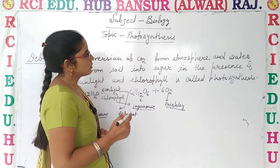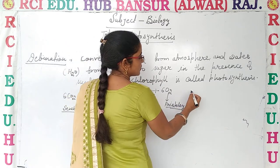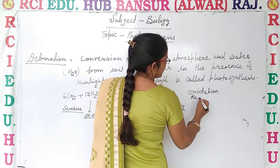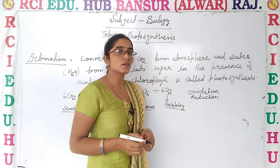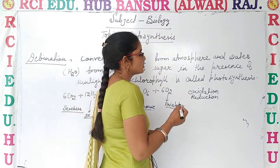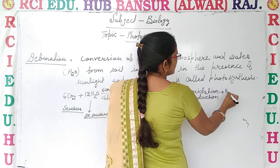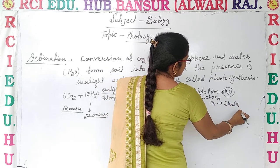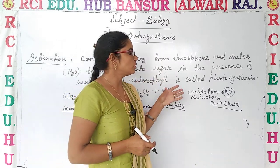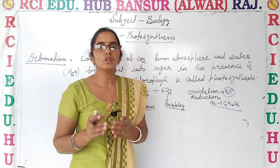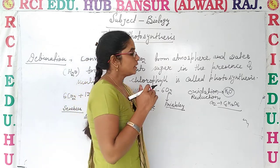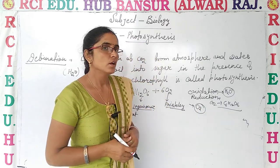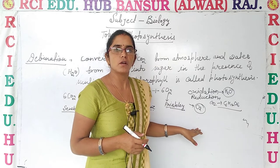In one way, photosynthesis is an oxidation-reduction reaction. Why is it said to be an oxidation-reduction reaction? Because in this process, water gets oxidized and CO2 gets reduced to carbohydrate. So it is not only the process which provides food to all living organisms, but it is also a process which produces oxygen available in the atmosphere. So it is a main source for atmospheric oxygen too.